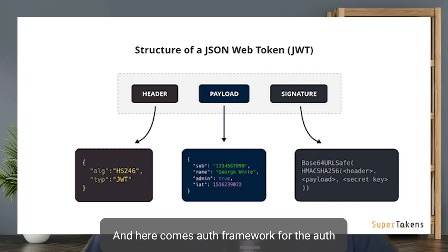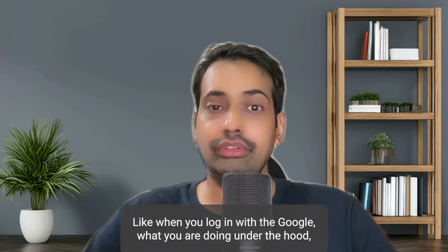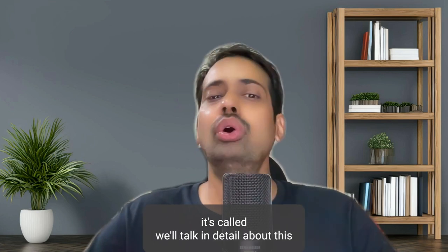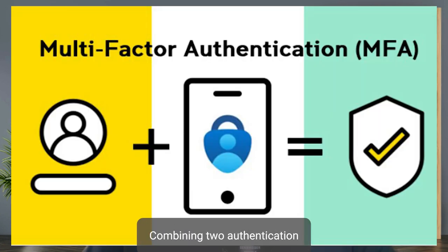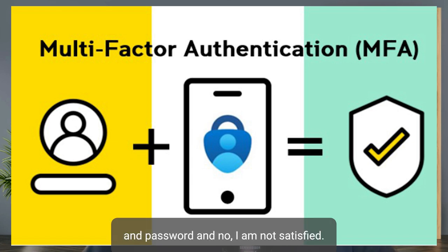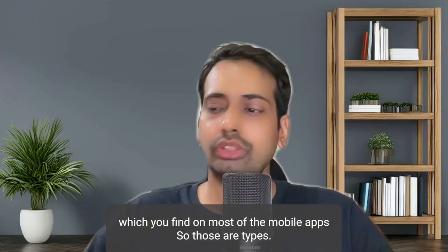Then there's the OAuth framework, which is for authorizing third-party applications to access user data. When you log in with Google, what's happening under the hood is OAuth. There's also multi-factor authentication, which combines two authentication approaches to add more security — for example, you log in with email and password, and then you're also asked for a security token that you can get through an authenticator app found on most mobile apps.